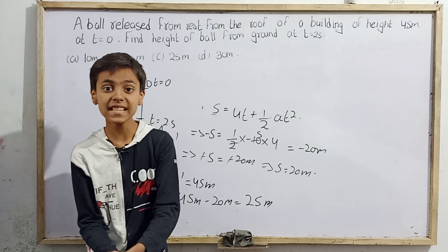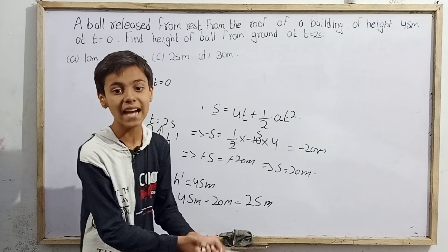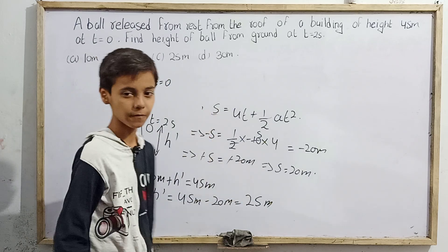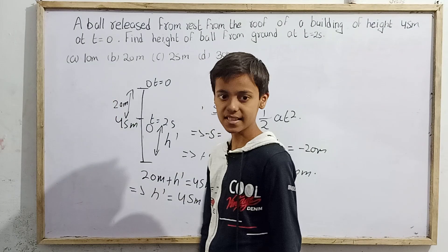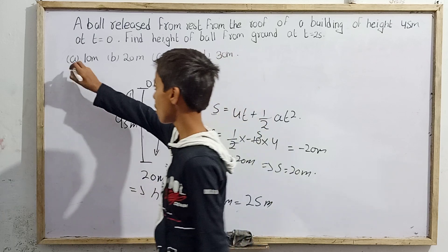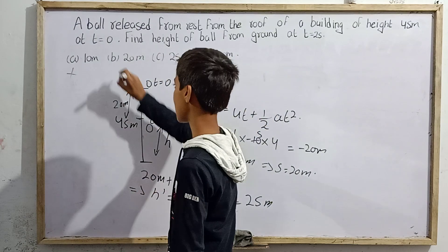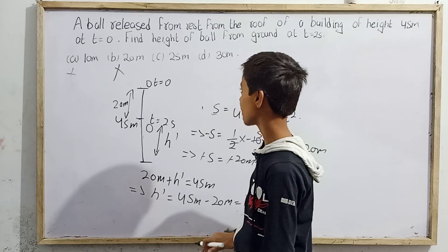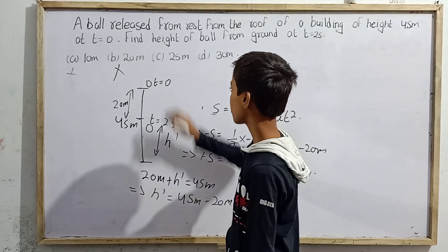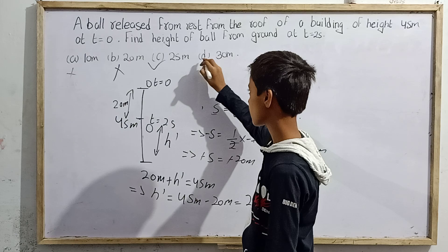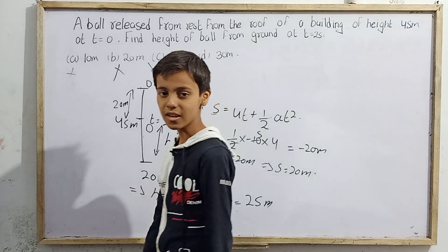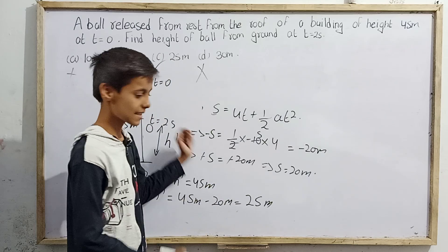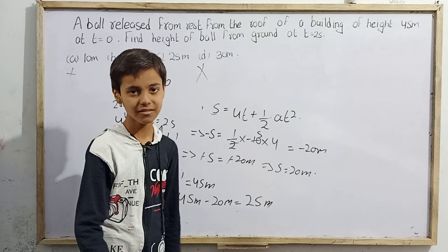So h dash, which is the height of the ball from the ground at t equals two seconds, is 25 meters. Option 10 meters is wrong, option 20 meters is wrong, option 25 meters matches our solution — that is correct, and option 30 meters is also wrong. Now let's move on to question number two.